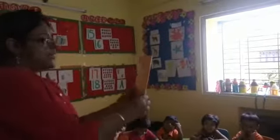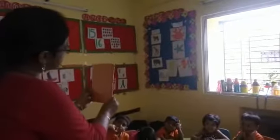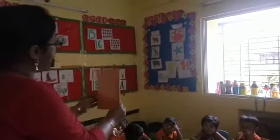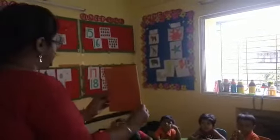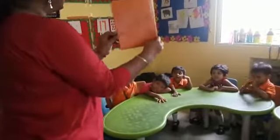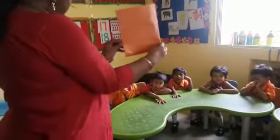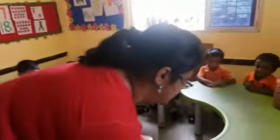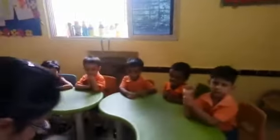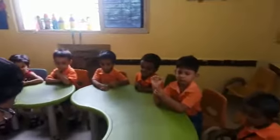This is the example of square. This is your exercise copy, right? This is also square in shapes. This is also square in shapes. Now, this is all of you know.